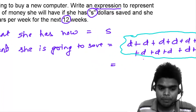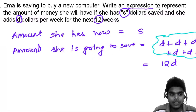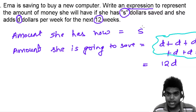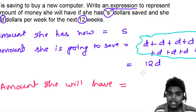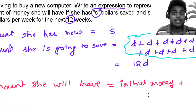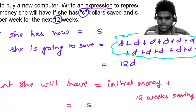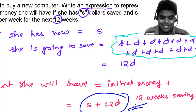So the question is asking: write an expression to represent the amount of money she will have. She already has S, and then she saves another 12D by the end of 12 weeks. Amount she will have equals initial money plus 12 weeks saving. Initial money was S, and 12 weeks saving was 12D. So S + 12D is the algebraic expression the question is asking for.